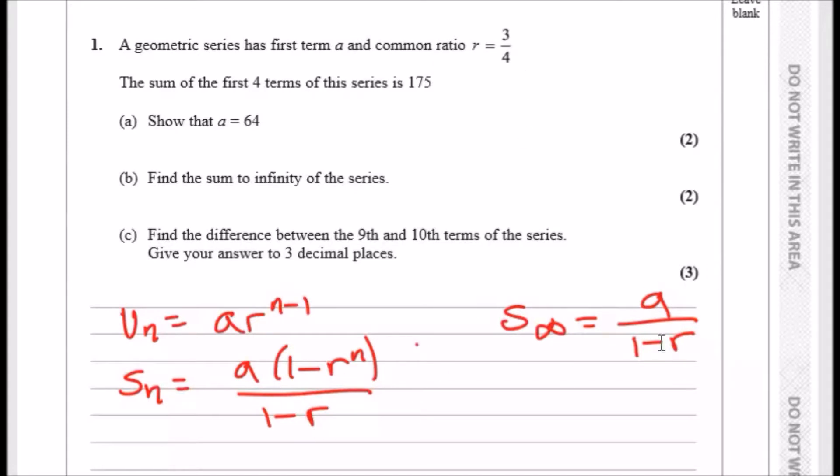So effectively, you can simplify a lot of these. The sum of the first four terms of the series is 175. So this means the value of S4 is 175, which would be useful for this Sn equation. Show that a equals 64.